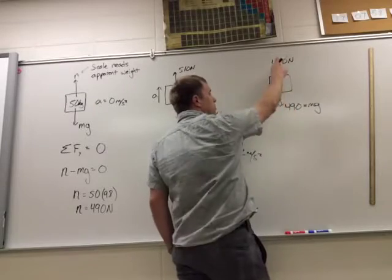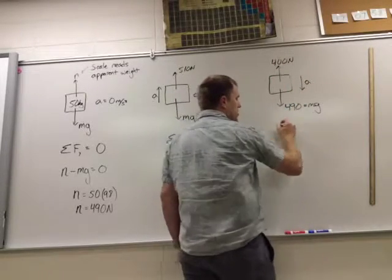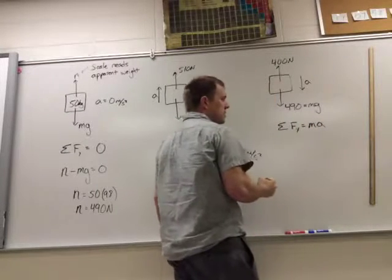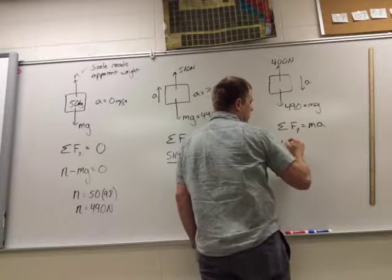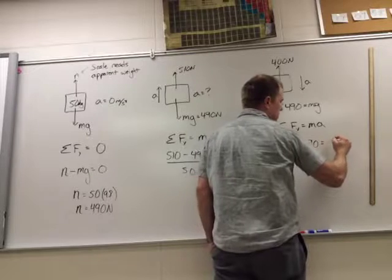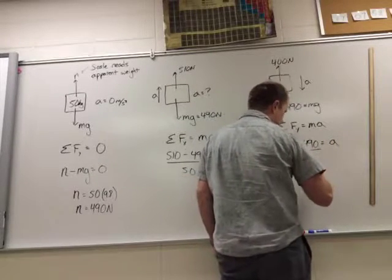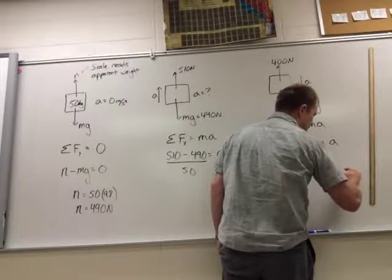But in this case the larger force points in the direction of the acceleration, so my acceleration will be down. So when I sum up the forces in the y direction, I have ma again. My mass is 50 kilograms again. But now I have 400 minus 490 equals ma. I'm going to divide the m over, so I divide by 50. And so my acceleration comes out to be negative 1.8 meters per second squared.